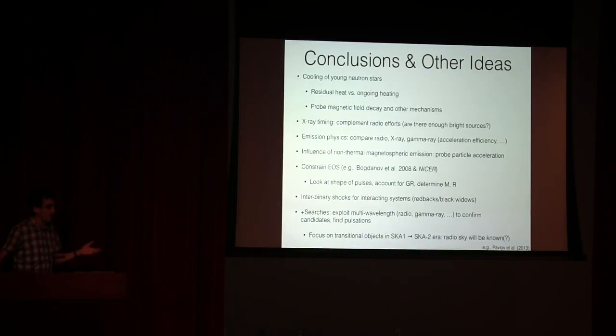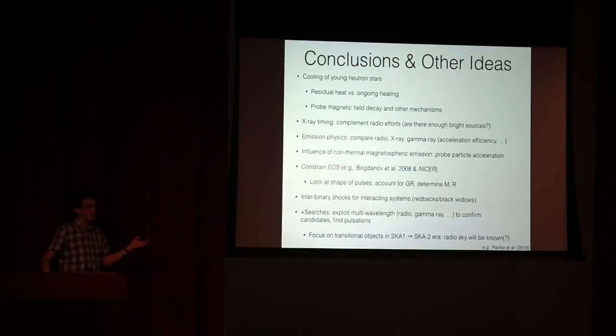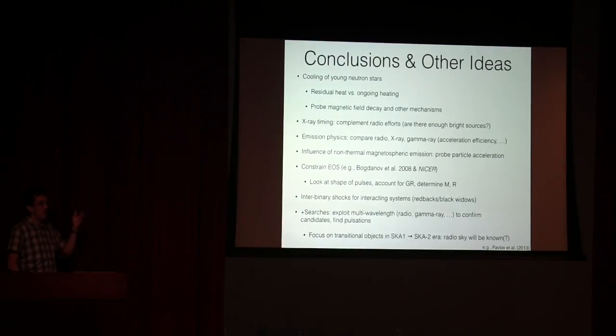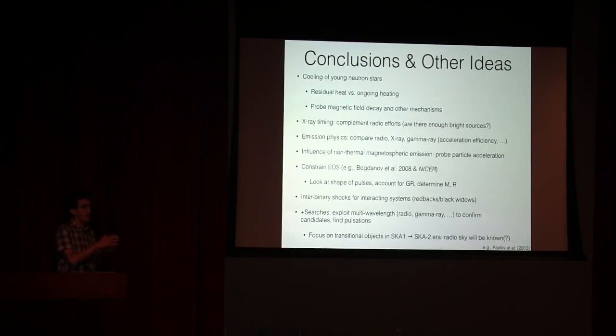What I've really not talked about online is all the emission physics that you get from studying the pulsar magnetospheres themselves. Looking at how bright are the x-rays? How do the x-rays compare with gamma rays with other wavelengths? Can you compare the features in the pulse profiles with features in other wavelengths to understand where the particles are accelerated? Even just the bulk energetics are a source of endless fascination.